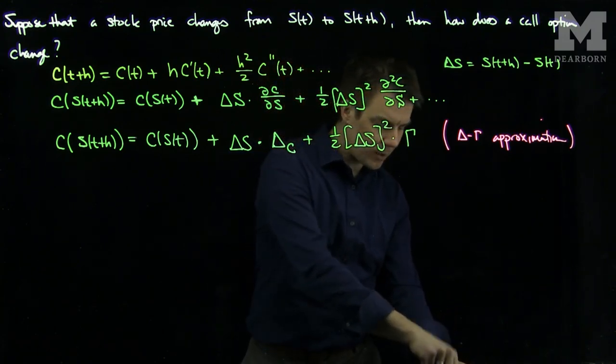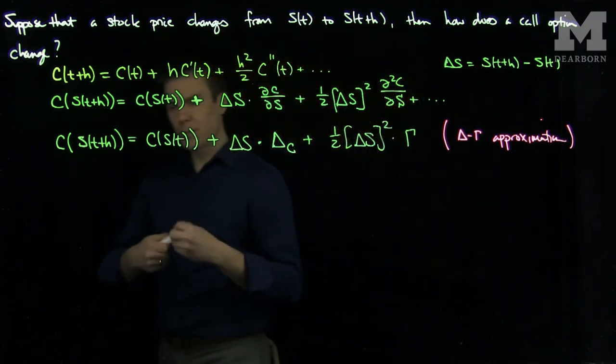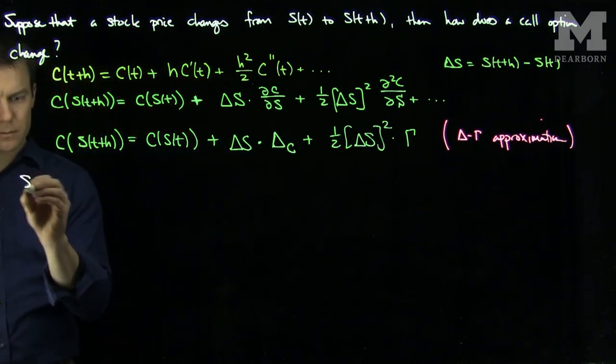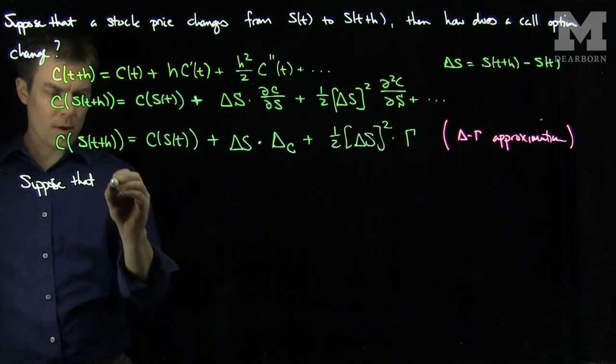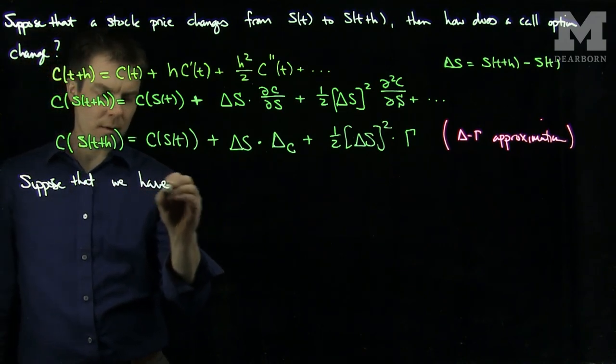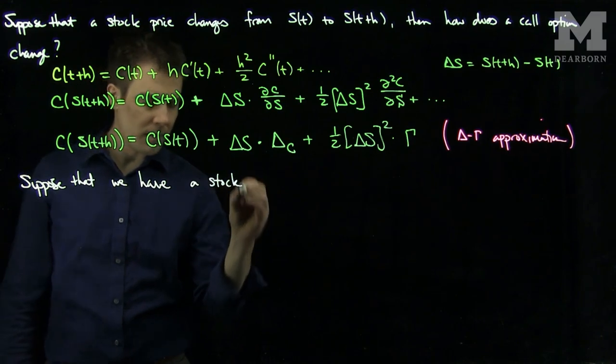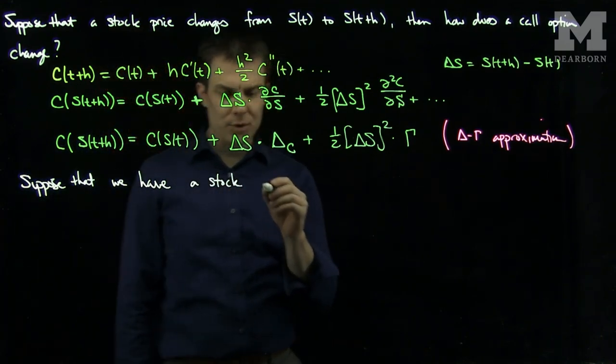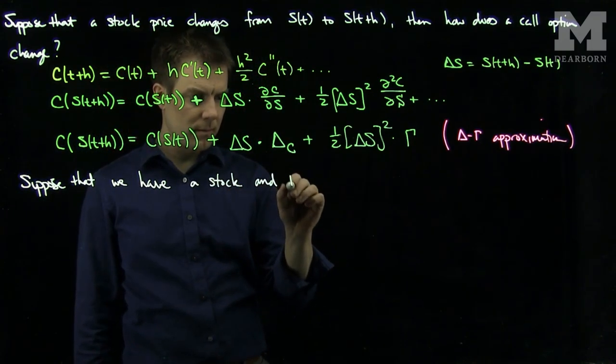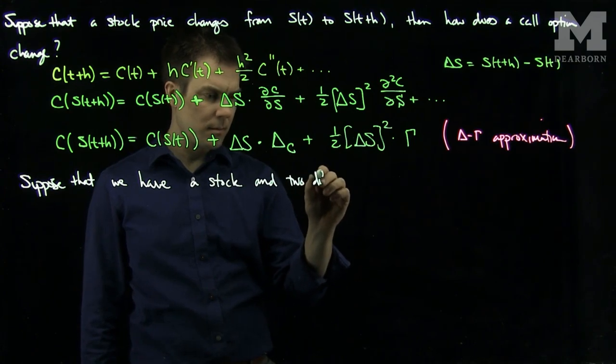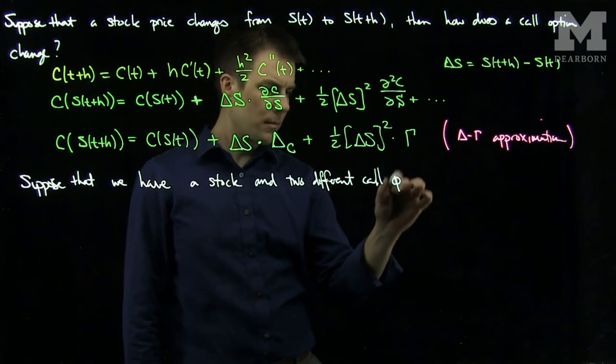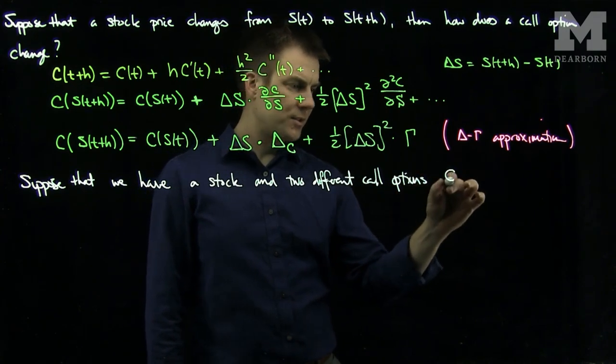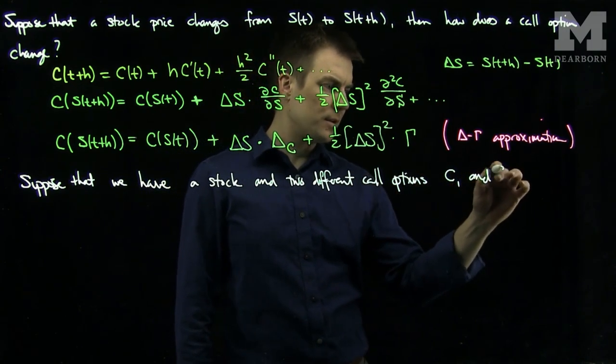Now we can see how we can delta-gamma hedge. Suppose that we have a stock and two different call options, let's say C₁ and C₂.